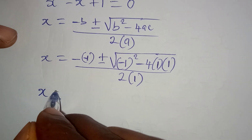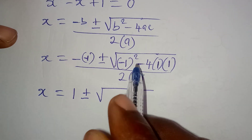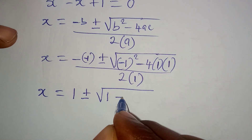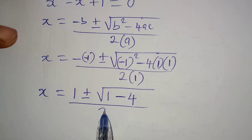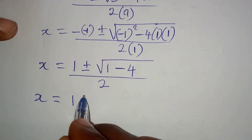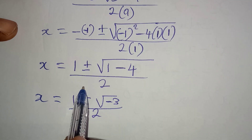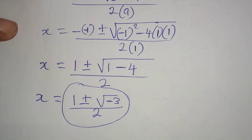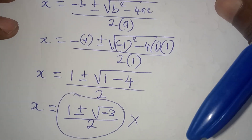Negative times negative 1 gives positive 1. Then plus or minus: minus 1 squared gives 1, minus 4 because 4 times 1 times 1 is 4, all over 2. So x equals 1 plus or minus square root of minus 3, all over 2. Because we have the square root of negative 3, this gives us a complex number — not a real number. So I'm not dealing with this and I'll leave it out.